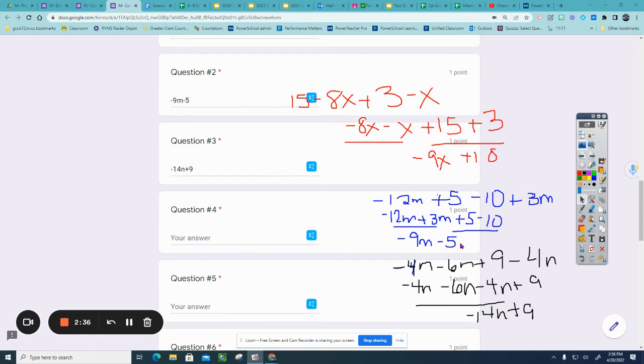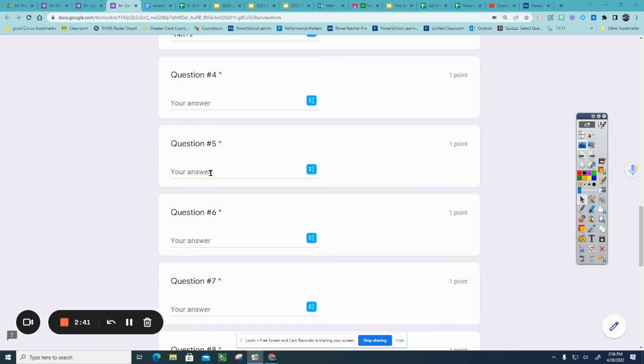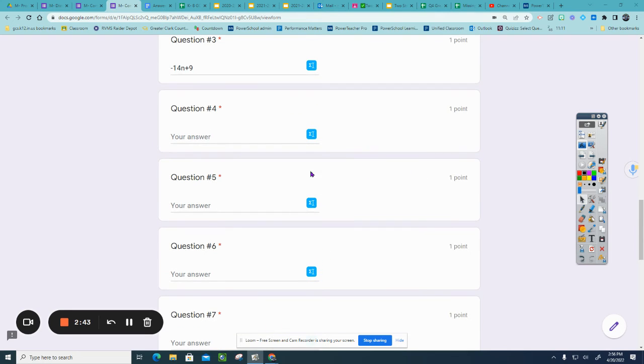Okay, we will continue with 4, 5, and 6. Number 4 is 22y minus 14 minus 9y plus 3 minus y. So I'm going to rearrange it, 22y minus 9y minus 14 plus 3.